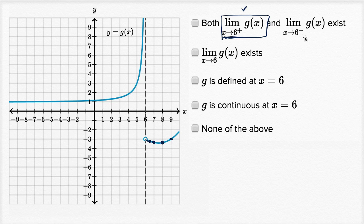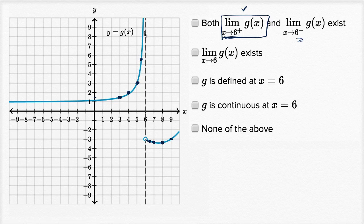Now let's think about the limit as x approaches six from the left-hand side. When x is equal to three, g of three is a little more than one. g of four looks like it's a little bit less than two. g of five looks like it's close to three. g of five point five looks like it's between five and six. g of five point seven five looks like it's approaching nine. As x gets closer and closer to six from below, it looks like we're unbounded — we are approaching infinity. So technically we would say this limit does not exist.